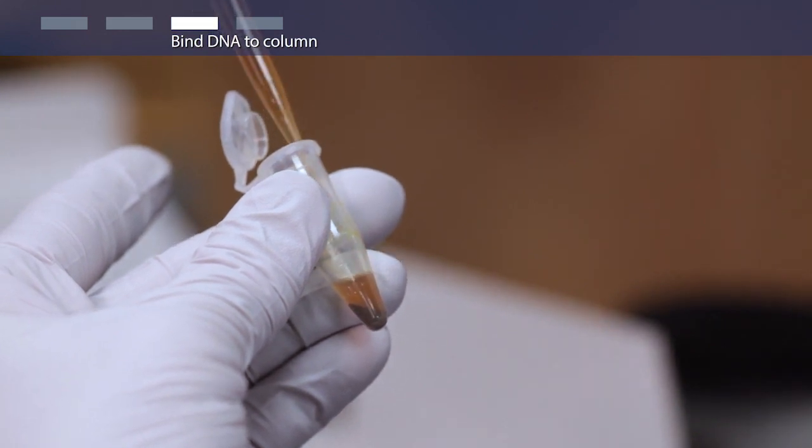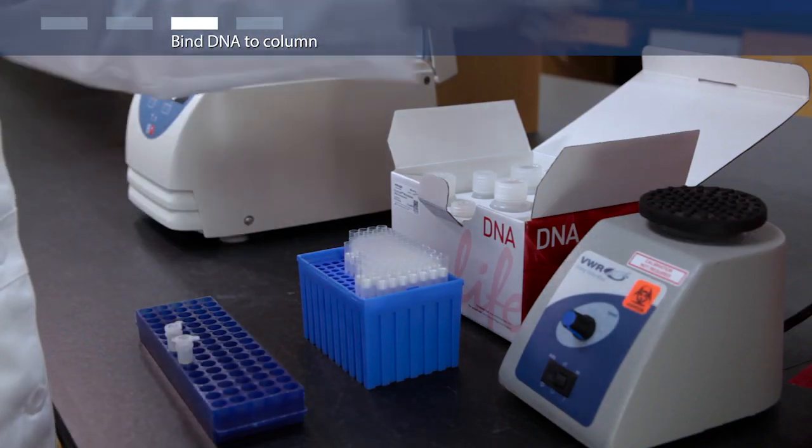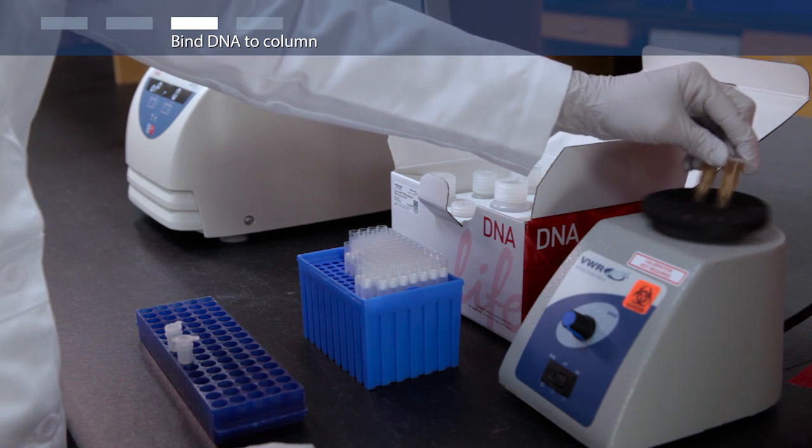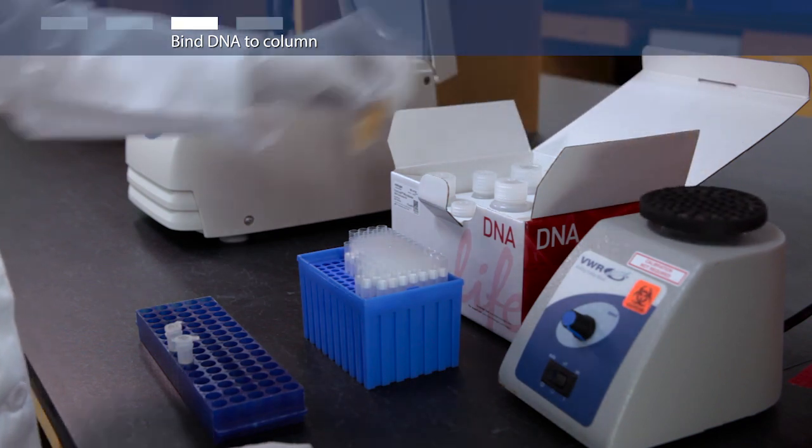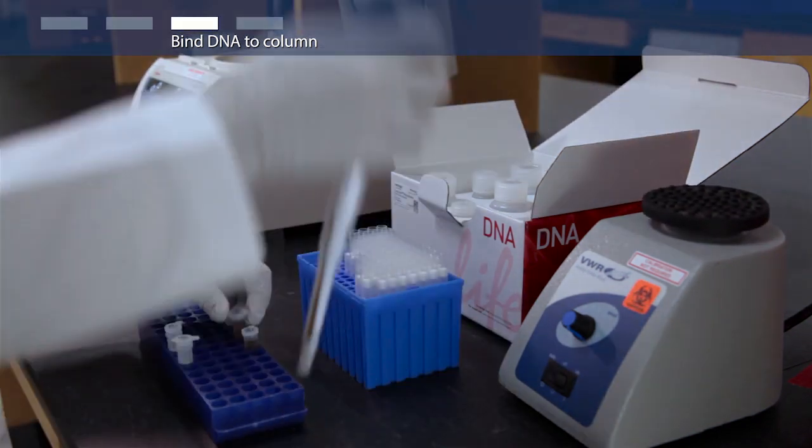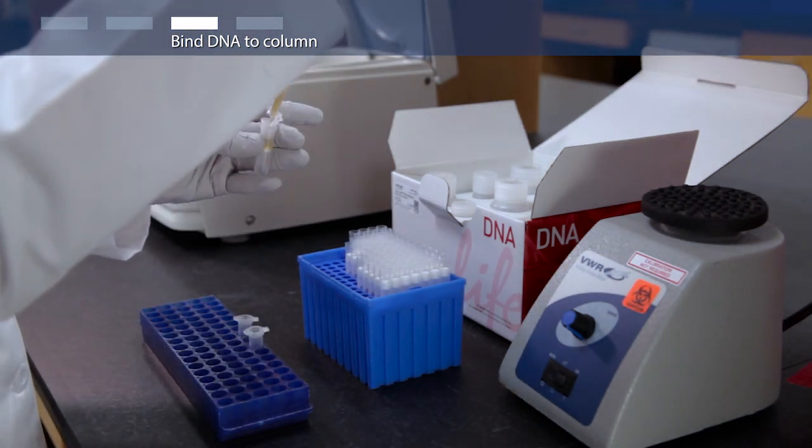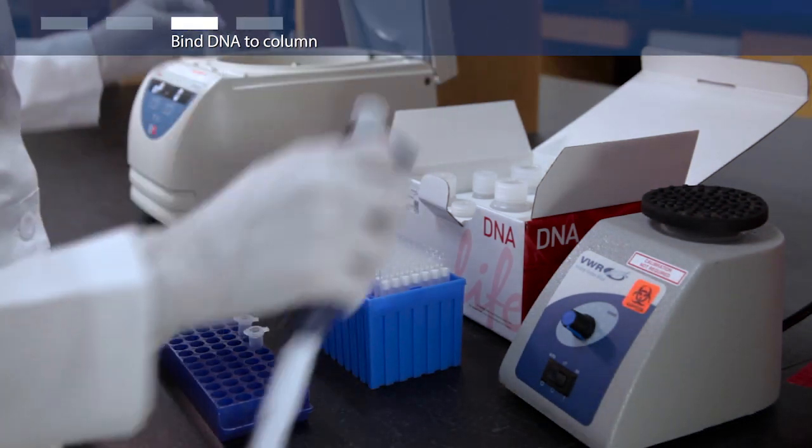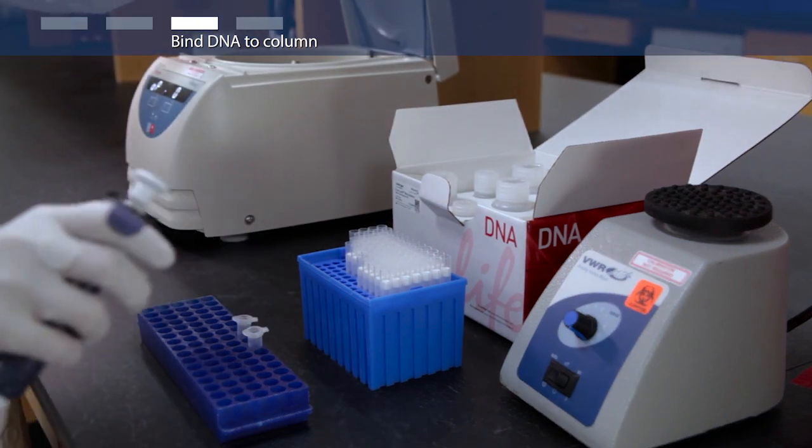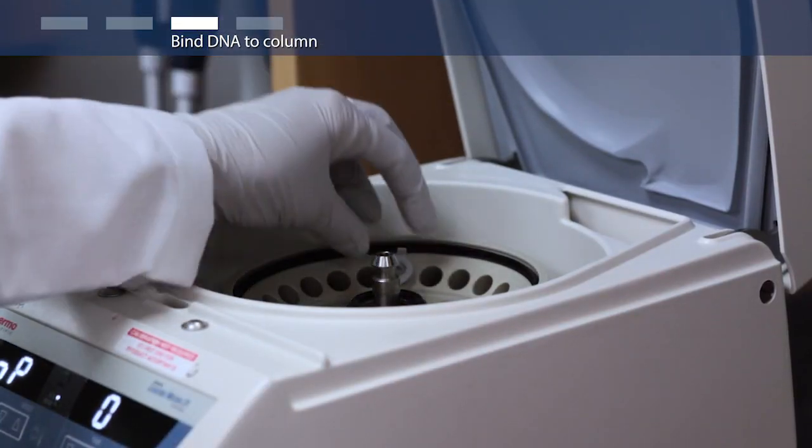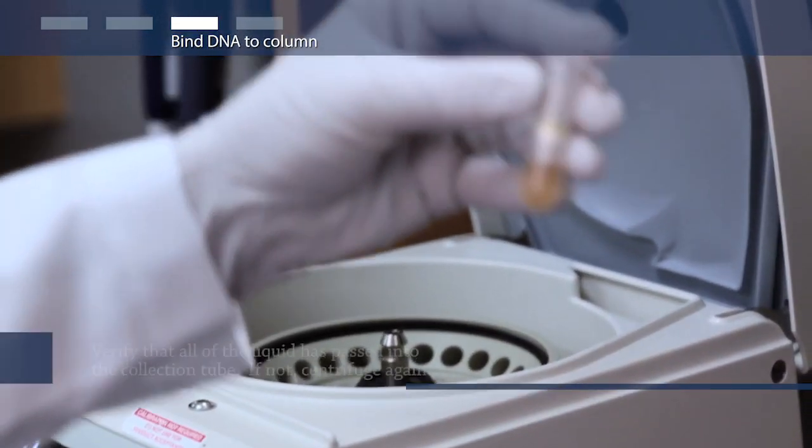Now, you'll bind DNA to the column. First, add 900 microliters of binding buffer and vortex briefly. Load 700 microliters of the sample mixture into a spin column and tube assembly and centrifuge at 14,000 G. Discard the flow through and repeat.